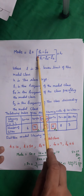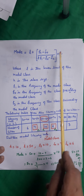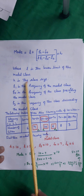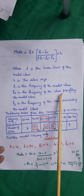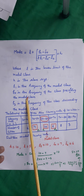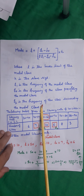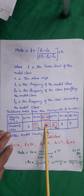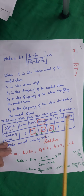Mode is equal to L plus (F1 minus F0) upon (2F1 minus F0 minus F2) into H, where L is the lower limit of the modal class, H is the class size, F1 is the frequency of the modal class, F0 is the frequency of the class preceding the modal class, and F2 is the frequency of the class succeeding the modal class. The modal class is that interval in which the frequency is maximum.